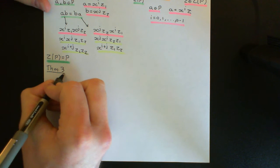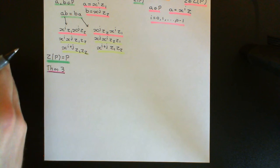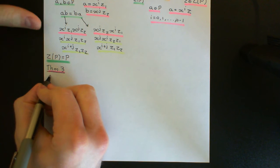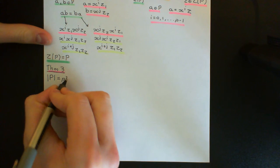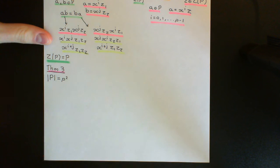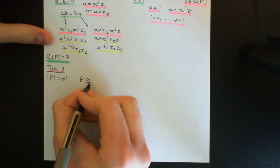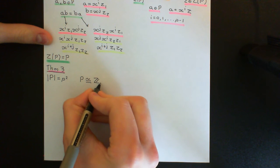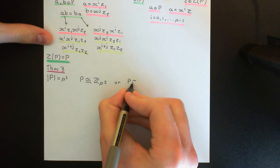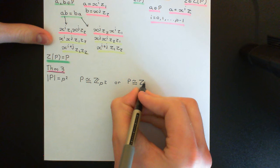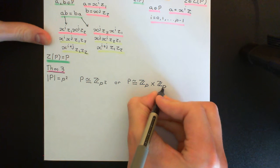So theorem three — I'll colour it in purple here. We're going to have, once again, this group which we'll call capital P, which has order a prime number squared. What we want to prove is that P is either isomorphic to the cyclic group on the set of p-squared elements, or P is isomorphic to the cyclic group on the set of p-elements direct-producted with the cyclic group on the set of p-elements. This isn't too difficult to actually prove.